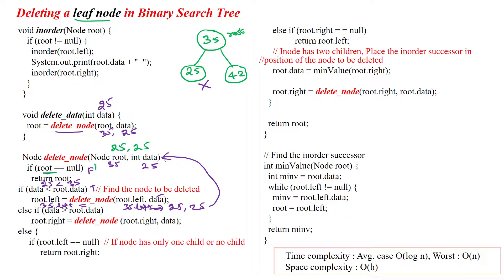We check root is null, which is false. Then we check data less than root dot data: 25 less than 25, which is false, so that statement will not execute. The else block will execute, and in the else block, data 25 greater than root dot data 25 is also false.